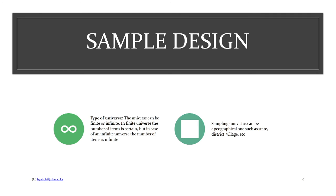In a finite population, the numbers are certain; in an infinite universe, the number of items you'll target is not known. If it is not known, you may want to sample. If it is known — finite — then depending on the size, you can as well do a census study.